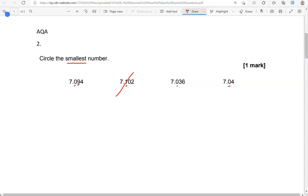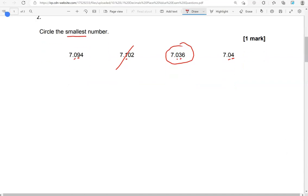So that's a 9, that's a 3, and that's a 4. 3 is the smallest of them all, so 7.036 is the smallest number out of these four.